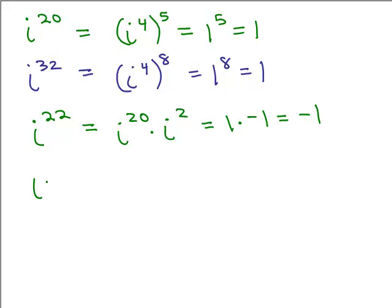How about i to the 33rd? 4 does not go into 33 evenly, but it goes into 32. So I can think of this as i to the 32nd times i to the first. i to the 32nd, because that exponent is a multiple of 4, gives me 1. So I just have 1 times i, which is i.